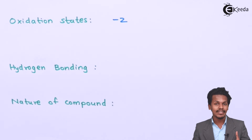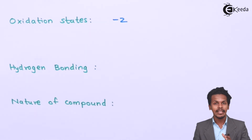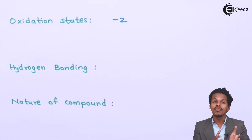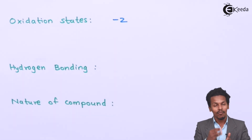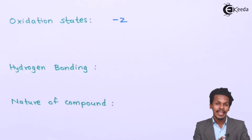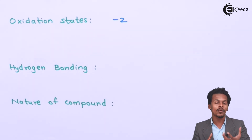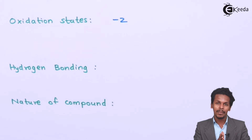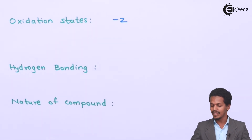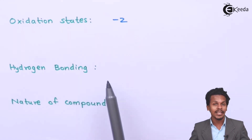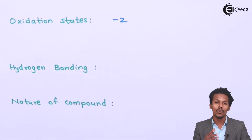The next point is hydrogen bonding. Whenever oxygen forms hydrides, oxygen being more electronegative allows the molecules containing hydrogen atoms to form hydrogen bonds. That's why water forms more hydrogen bonding compared to H₂S. H₂S is a gas at room temperature, so there is no possibility of forming a hydrogen bond, whereas H₂O is liquid due to hydrogen bonding.